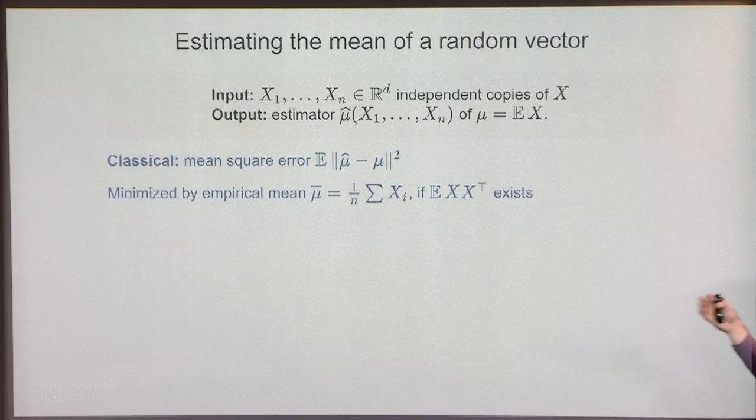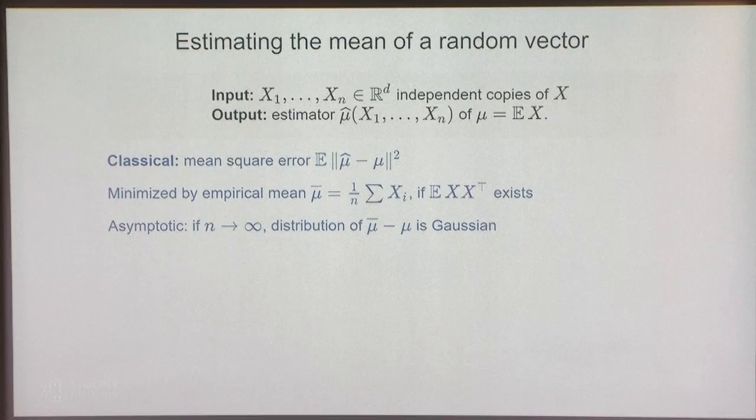In the classical picture, under this weak assumption, we can say something about how the empirical mean fluctuates about the population mean, at least asymptotically. If the number of samples goes to infinity, the central limit theorem says that the distribution of mu-bar, the empirical mean, becomes Gaussian.